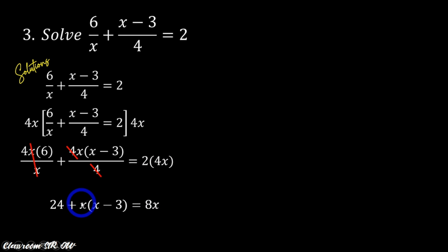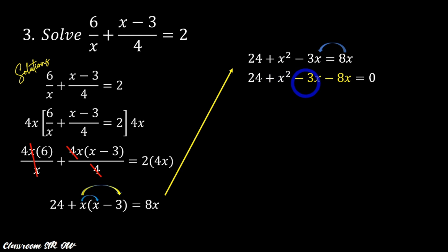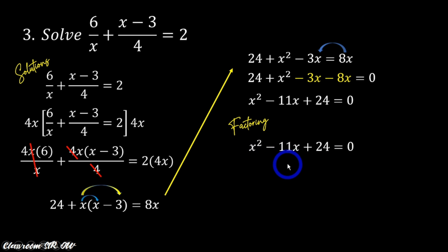We then distribute x inside the parenthesis: 24 plus x squared minus 3x equals 8x. We transpose 8x to the other side: 24 plus x squared minus 3x minus 8x equals zero. Negative 3x and negative 8x are similar terms, so combining them gives negative 11x. Arranging in standard form: x squared minus 11x plus 24 equals zero. Since this is already in standard form, we can apply factoring. The coefficient of x squared is 1, making it straightforward.